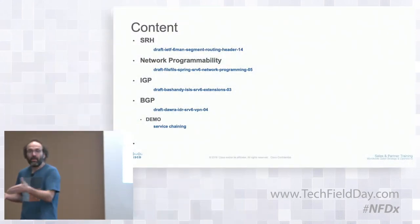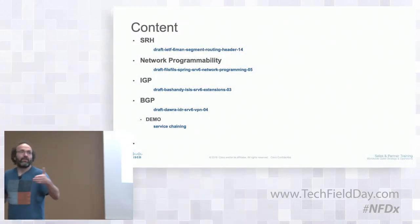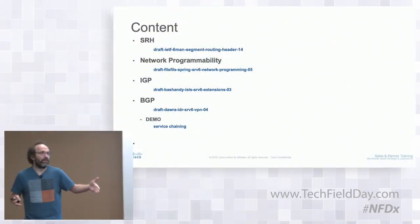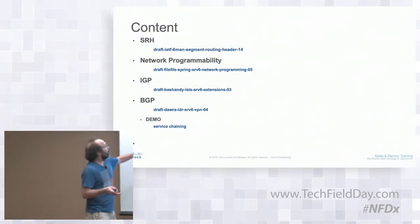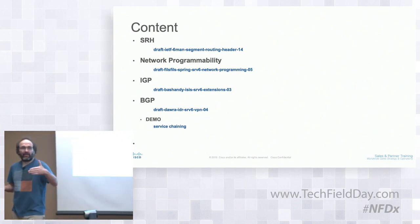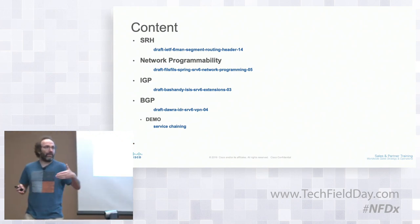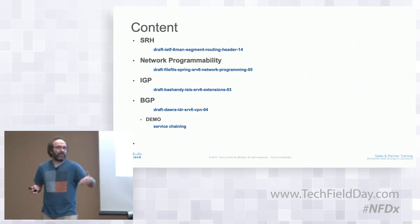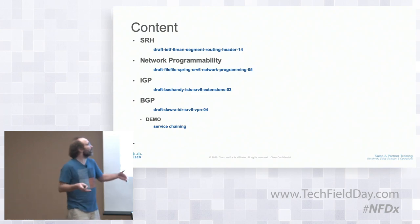What Cisco is doing with segment routing is trying to standardize everything. Jose showed all the drafts and RFCs covering SRMPLS, and here are the most important drafts covering SRV6. We will start with SRH—the segment routing header—which explains how forwarding is done.